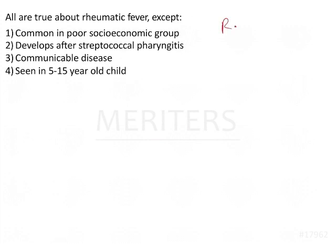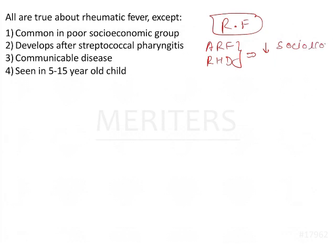Acute rheumatic fever, or rheumatic heart disease, is a disease of low socioeconomic background. That's the reason this particular disease is generally seen in poor people.